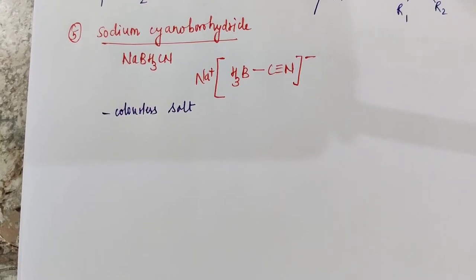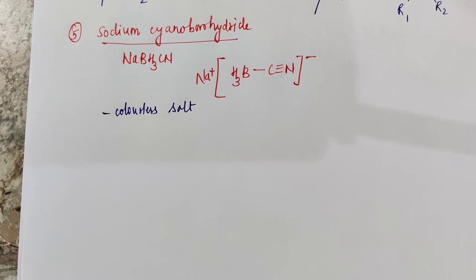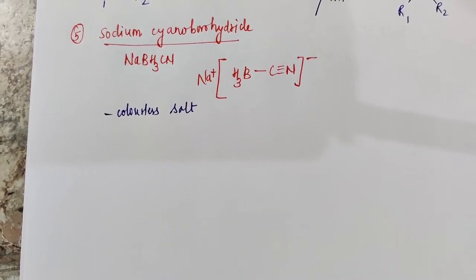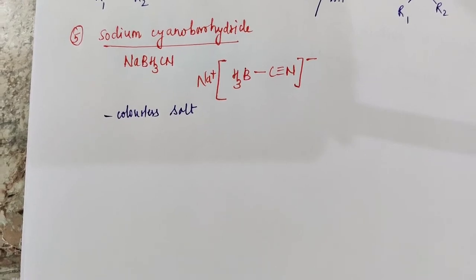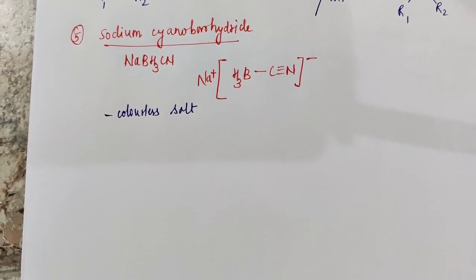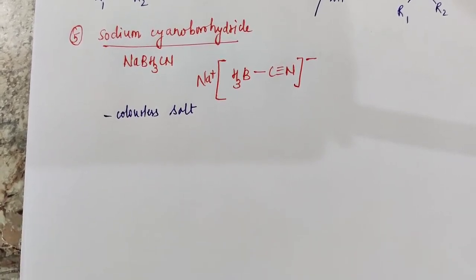Next reducing agent is sodium cyanoborohydride. It is a colorless salt. It is also used for the reductive amination of aldehydes and ketones similar to that of the STAB reducing agent.